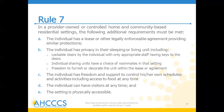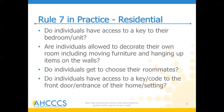Rule 7 is specific to residential settings. In a provider-owned or controlled home and community-based residential setting, the following additional requirements must be met: the individual has a lease or other legally enforceable agreement providing similar protections; the individual has privacy in their sleeping unit, including lockable doors; individuals sharing units have a choice of roommates; freedom to furnish or decorate the unit; the individual has the freedom and support to control his or her own schedules and activities, including access to food at any time; individuals can have visitors at any time; and the setting is physically accessible. We'll go through and break these down a little bit more.